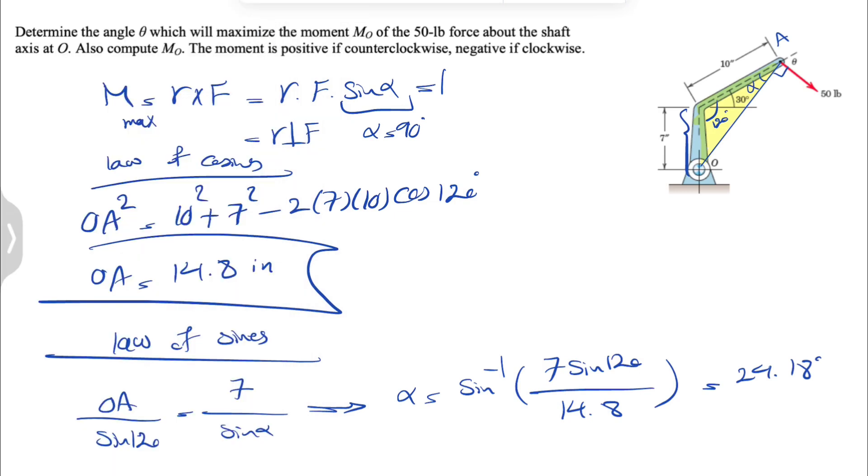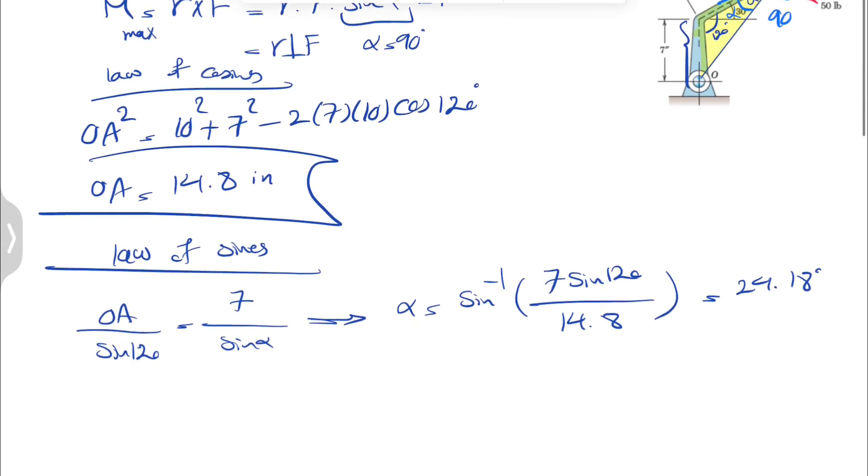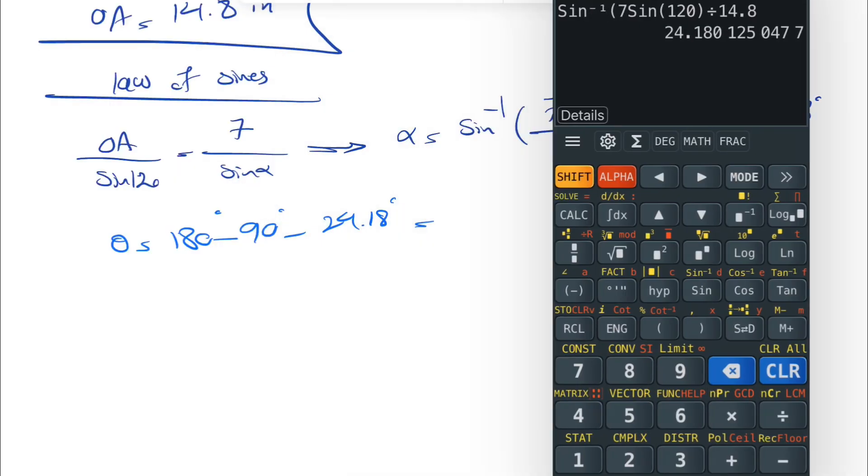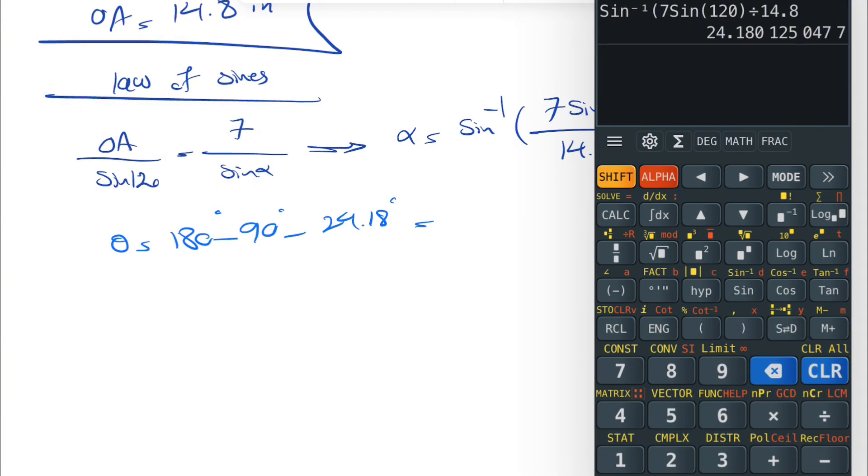We have this line here where we found this angle alpha. This one's 90 degrees and this is theta. So it would be 180 minus 90 minus our alpha 24.18. Let's see what we get. It'll be 90 minus 24.18, which is going to be 65.82 degrees.